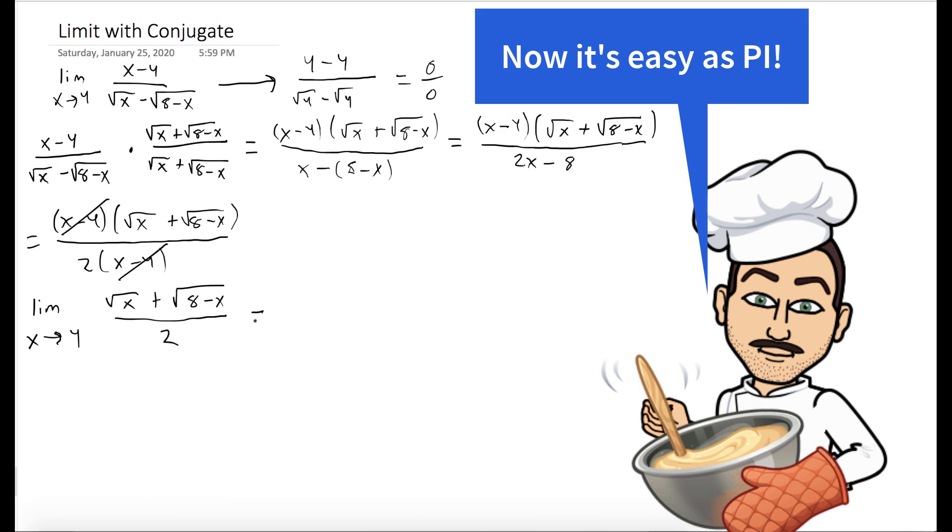And so we just plug in x equals 4, and we get 2 plus 2 over 2, which is equal to 2.